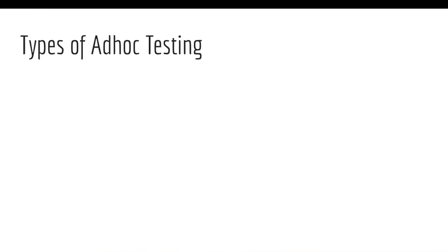Now, let us see what are the types of ad-hoc testing. First, monkey testing. Monkey testing is a type of testing that is performed with the intent to break the system. The tester performs this by passing random input and following random workflows.